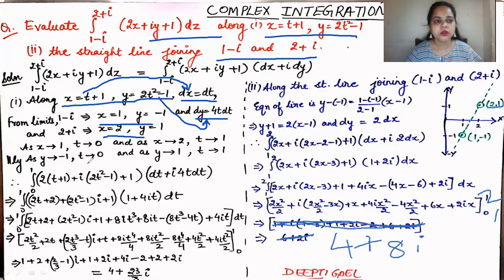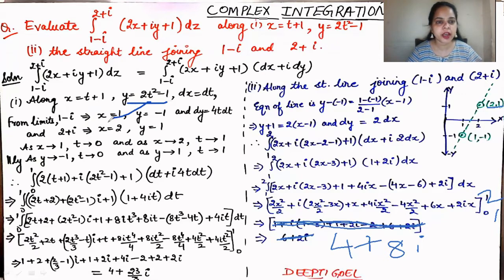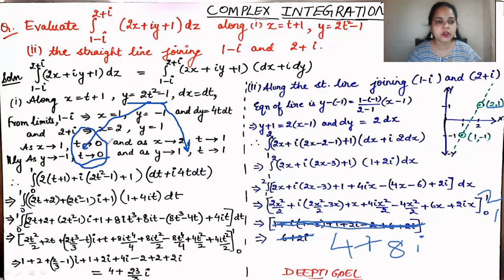Since every variable is in t, the limits must also be in terms of t. From the x equation, when x = 1, t = 0, and when x = 2, t = 1. From the y equation, when y = -1, t = 0, and when y = 1, t = 1. So for both x and y, the initial limit of t is 0 and the final limit is 1.